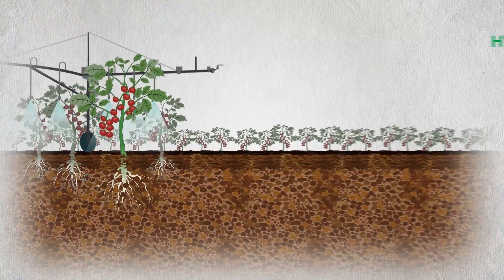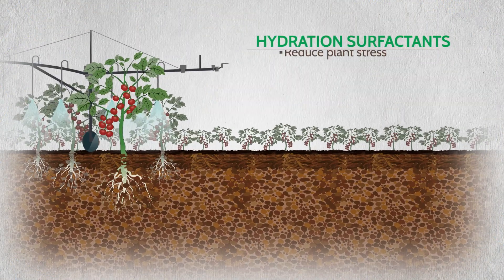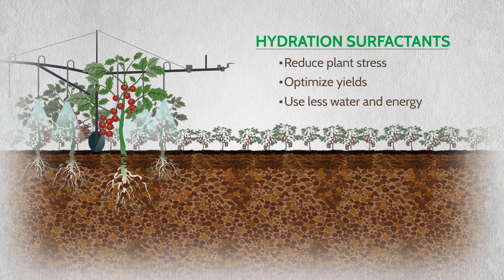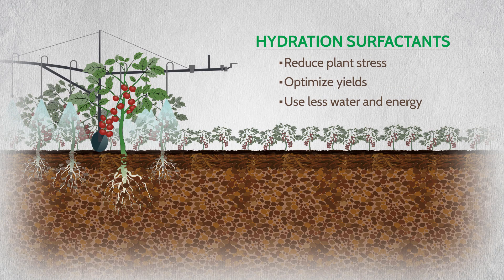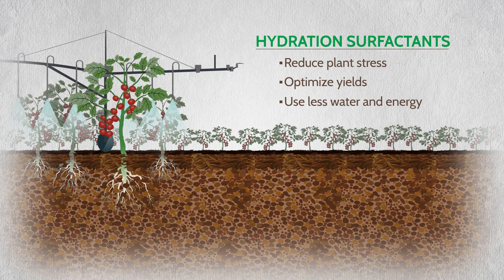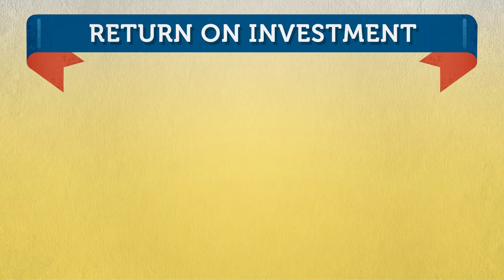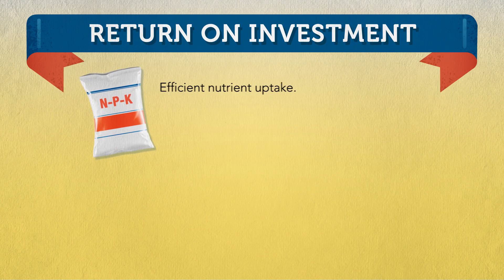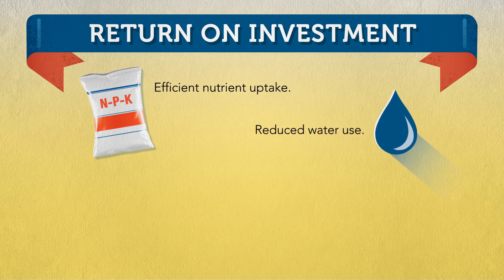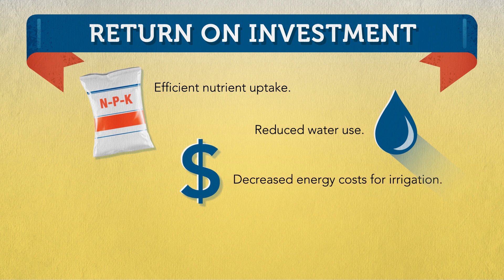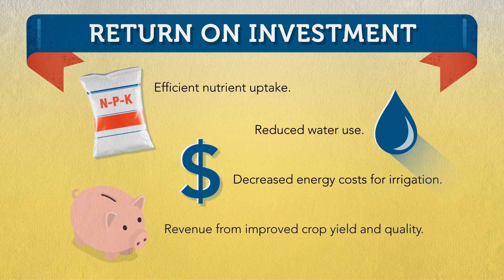Crops grown on soils treated with hydration surfactants experience less stress and optimized yields, while using less water and the energy required to pump it. Irrigation chemistries have a great return on investment, such as efficient nutrient uptake, reduced water use, decreased energy costs for irrigation, and revenue from improved crop yield and quality.